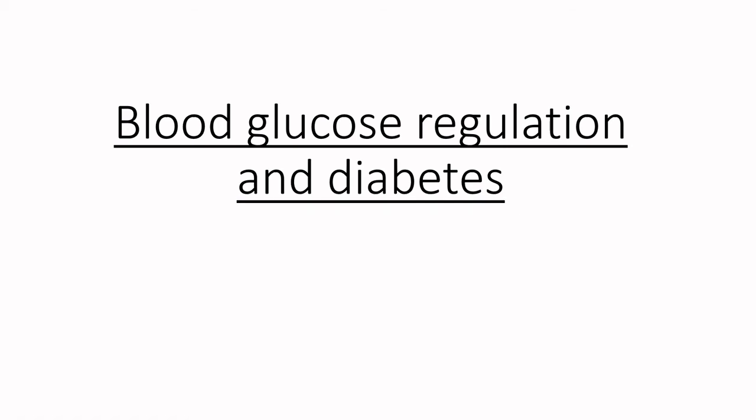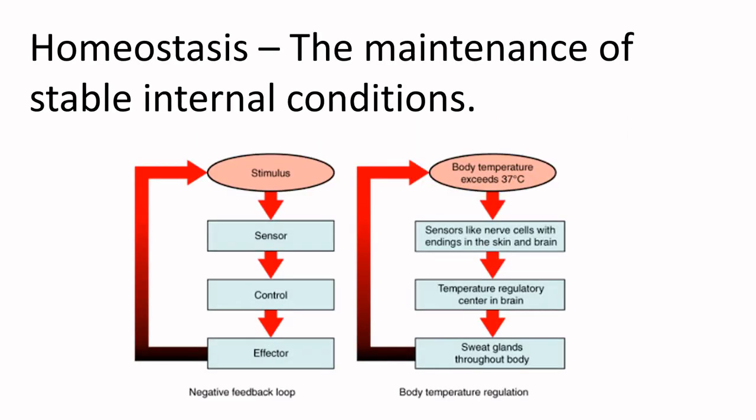Hello everyone, today we are talking about the regulation of blood glucose levels. A good place to start is with homeostasis. Homeostasis is the maintenance of constant, stable internal conditions. In order for this to happen, the body has to be able to detect a change and activate measures to counter it. For example, if our internal or external detectors — our skin and our hypothalamus — detect an increase in temperature, our body does everything it can to reduce the temperature back down again to maintain these stable conditions.